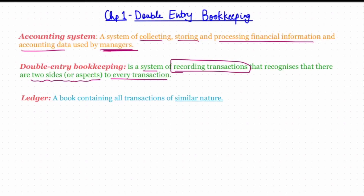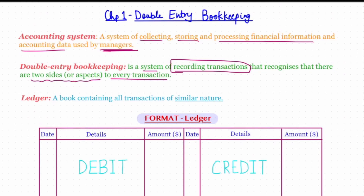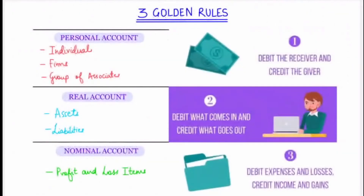The debit and credit effect has to be recorded in a ledger. In basic terms, debit is written on the left side of the ledger and credit is written on the right side. While posting a transaction, note that these cannot be interchanged. To understand the debit and credit effect of a transaction, it is crucial to understand the three golden rules of accounting, based upon three types of accounts.